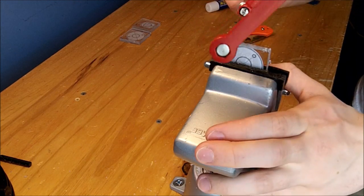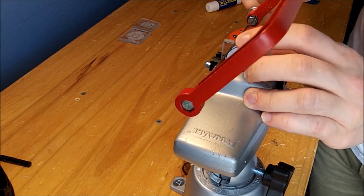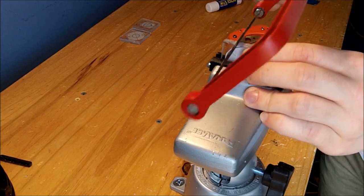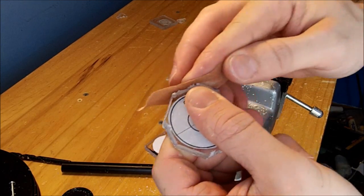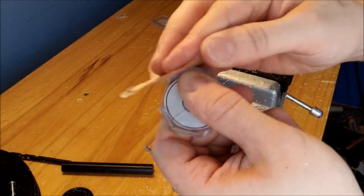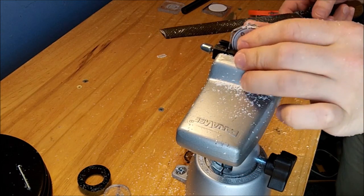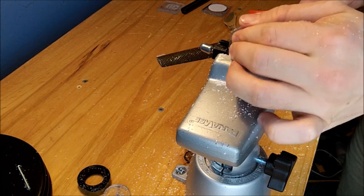Using a hobby saw, cut away at some of the excess material. Deburr the material with some sandpaper to check your progress. At this point, your material should be an octagon shape.